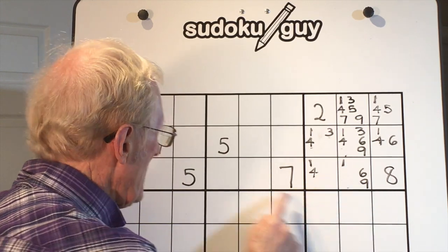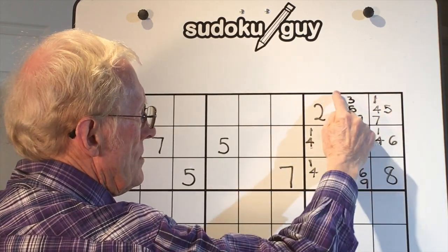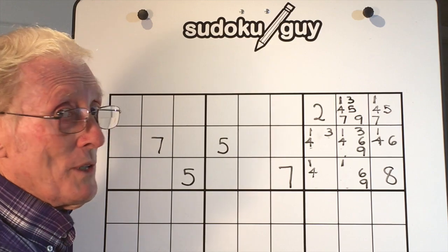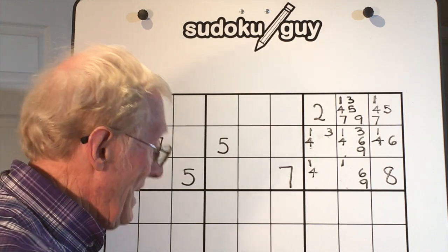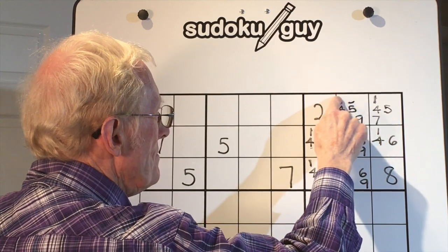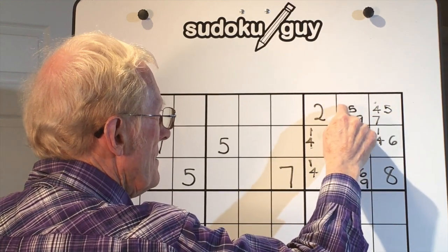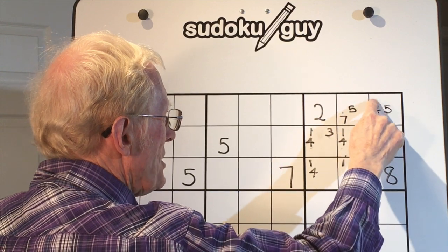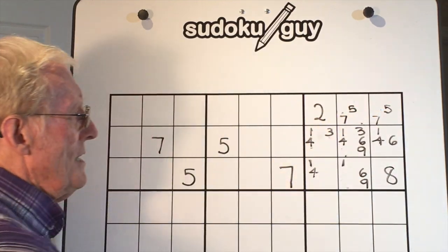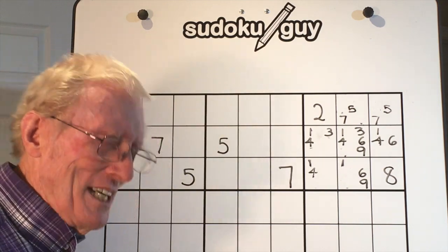Now, because it was a cleaver, the 5 and 7 have to go in these two cells here and it becomes what we call a hidden matching pair. So I can now remove all these little numbers and leave the 5 and 7 there, and it becomes a hidden matching pair.